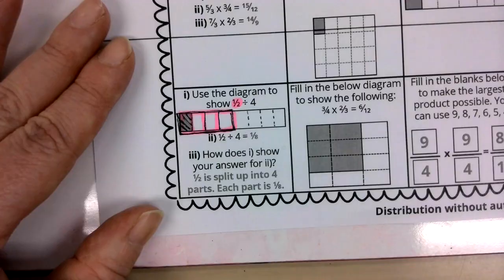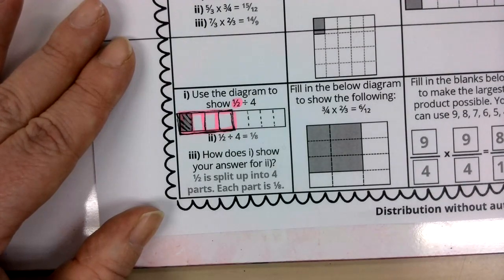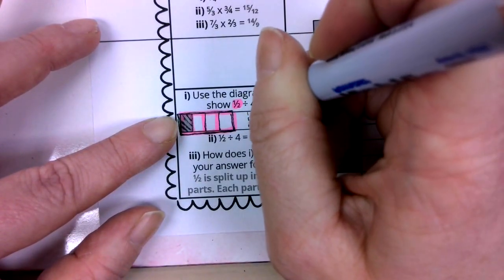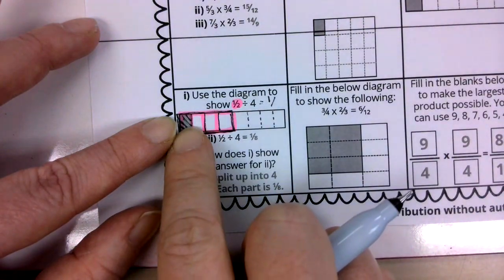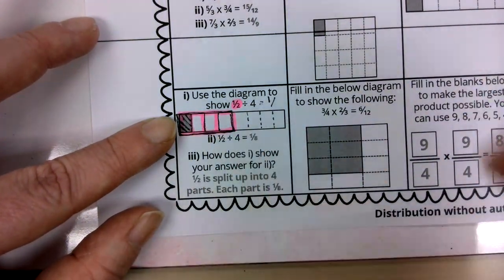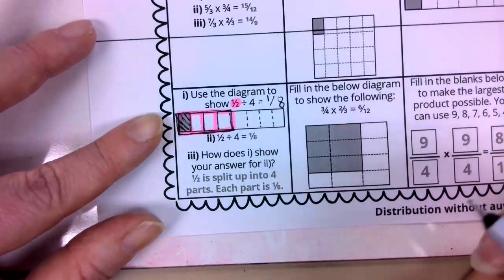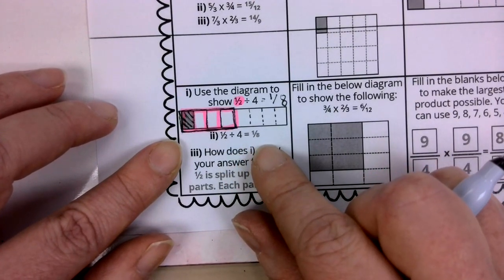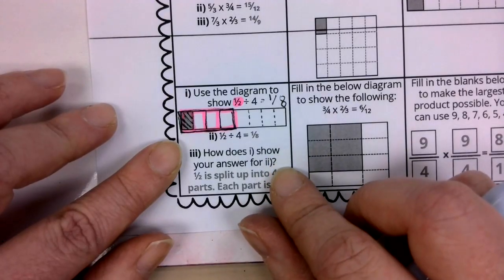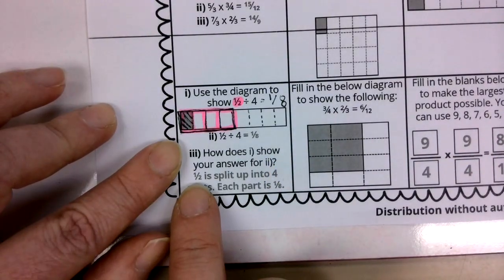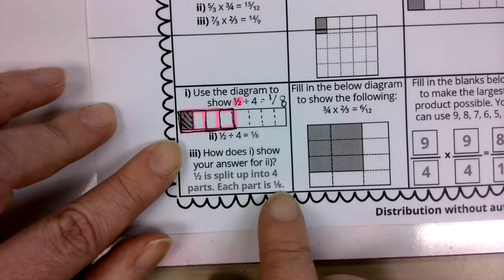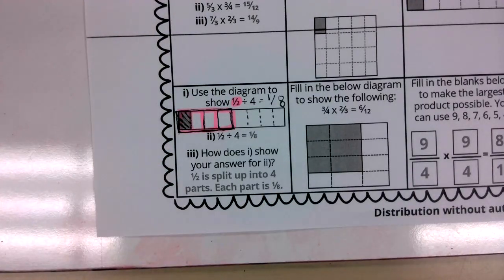The answer to this problem is how much of the chocolate bar I have related to the entire chocolate bar. I have, in full, one piece out of, if I broke the entire chocolate bar in the same manner, that would be eight pieces for the entire chocolate bar. That is where we get our answer here. One-half divided by four equals one over eight. And how does this show my answer? Well, what I did is I showed one-half is split up into four parts. So, each part would be one-eighth. Boys and girls, this video helps us to see answers for week 15 Monday.